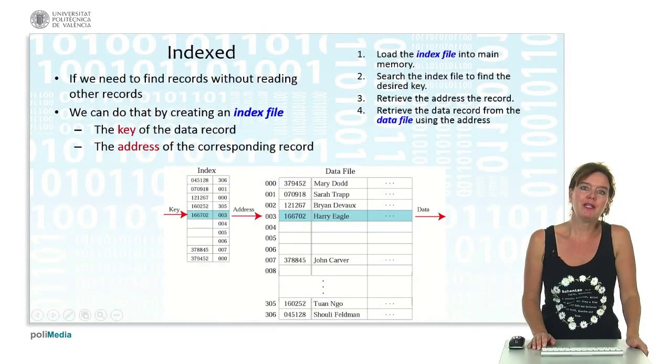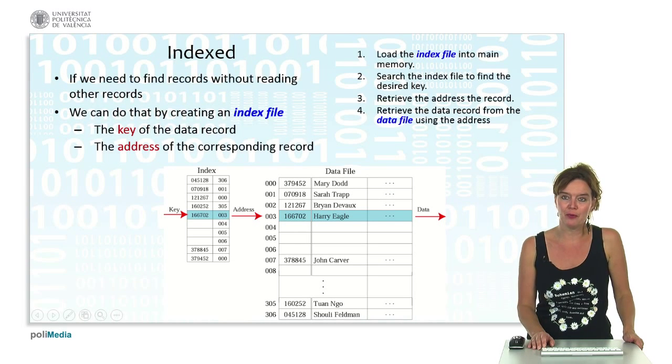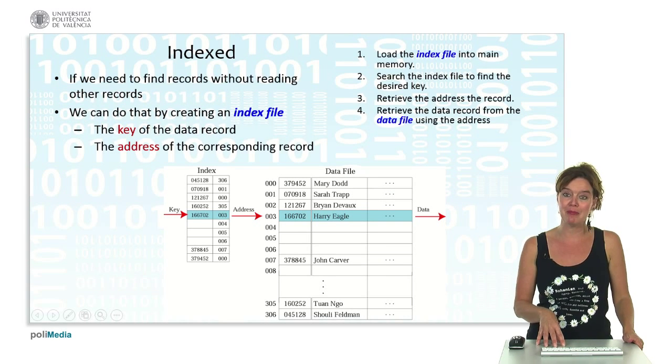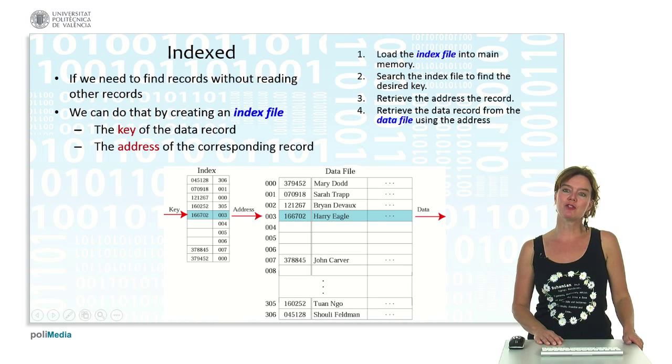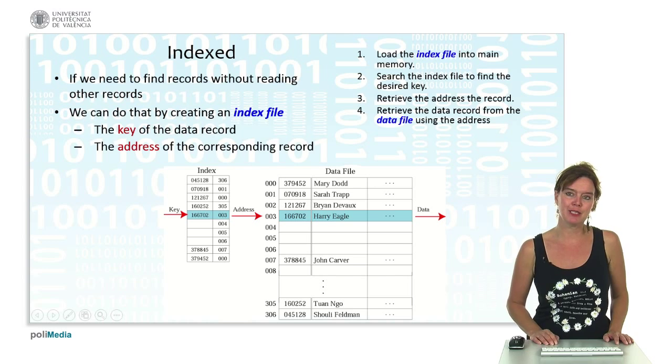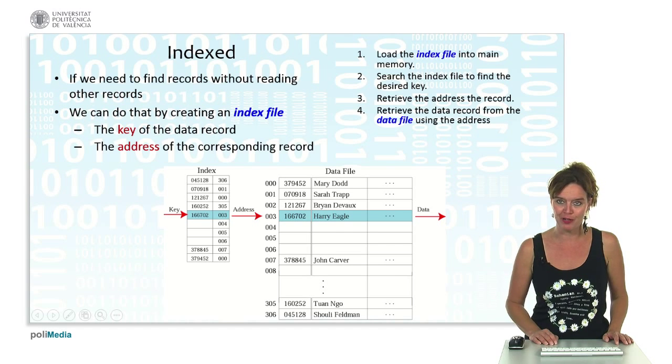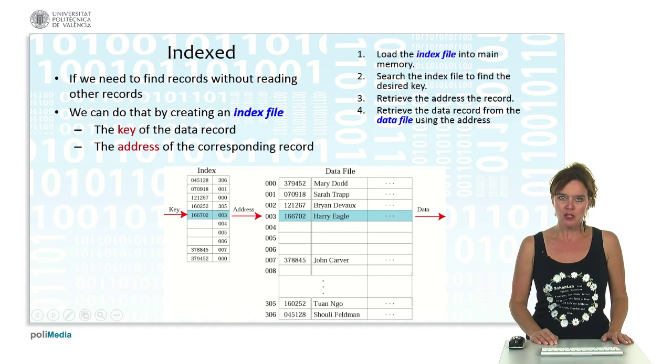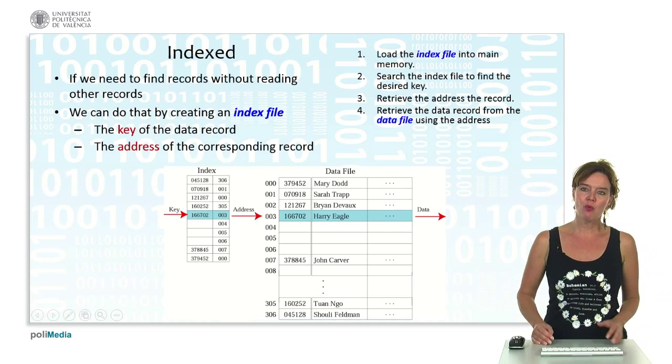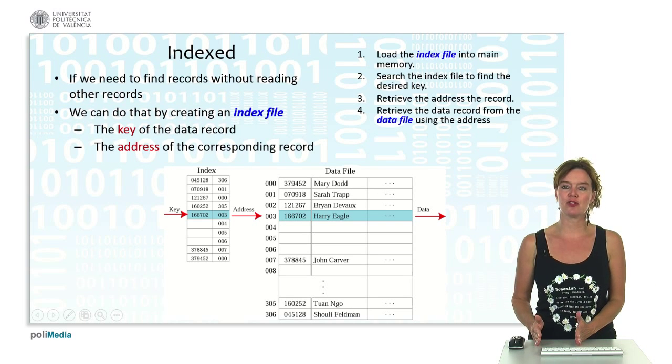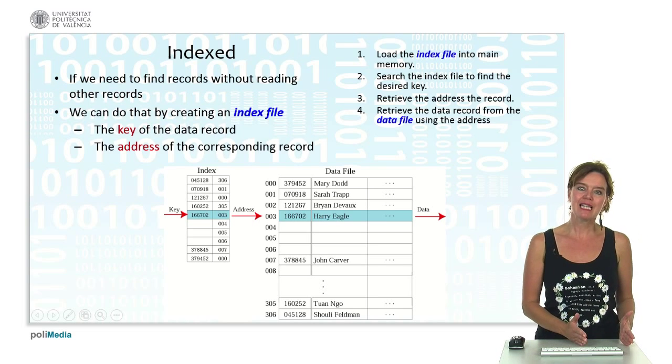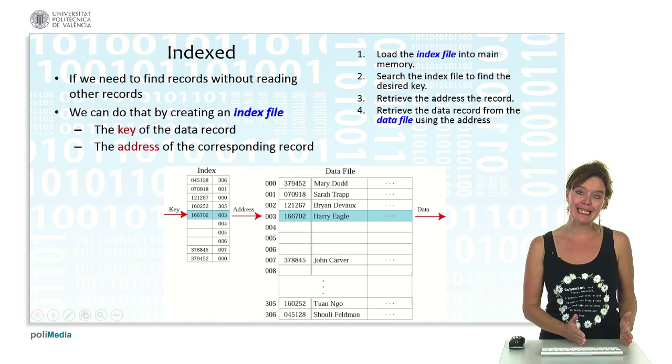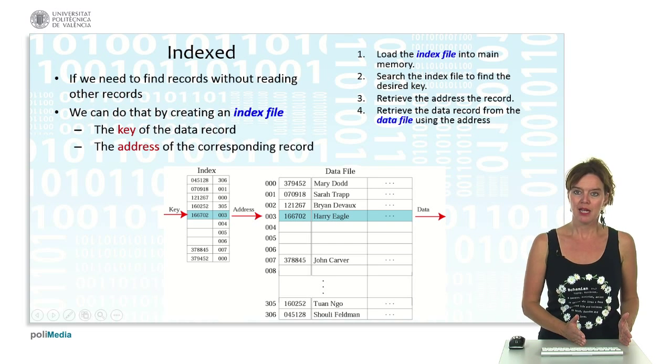What if we don't want to look at other records and just find a specific record immediately? That would be quicker. If we want to do that, we use indexed file organizations. We don't only have the data file that contains the records; we also have an index file.